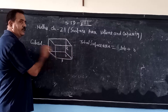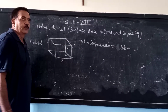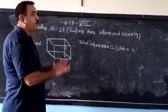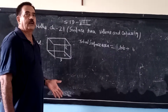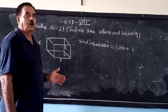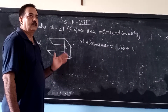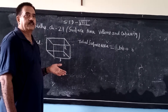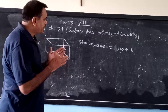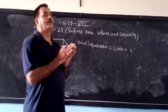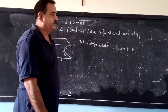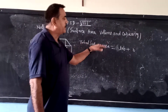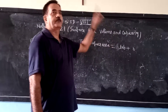First of all, the cuboid. See this cuboid — you can take the example of a ruler. So in a cuboid, how many faces are there altogether? Altogether there are six faces. So six faces combined together form the cuboid, then you have to find the total surface area of the cuboid.